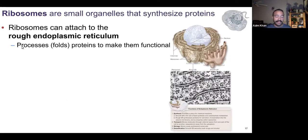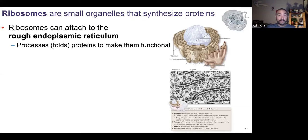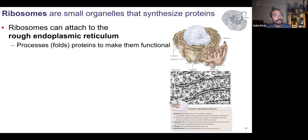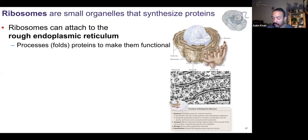DNA are just instructions. We have to be able to read them and take them to a workbench to construct our proteins. DNA does not turn into proteins — you read the DNA and then use building blocks to make the proteins. What happens is you take a transcript of the DNA. We don't want to take the DNA out of the nucleus, but we can take the transcript out, which is like a carbon copy of the DNA.